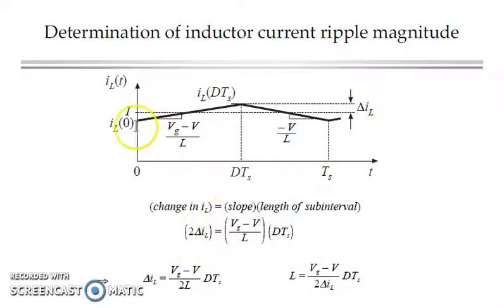that will be equal to, for example, if I take a single rising slope, it is 2 times del IL equal to Vg minus V, which is the slope into the on period, which is D times Ts. From this, you could find out the inductor. Here, del IL is the current ripple.